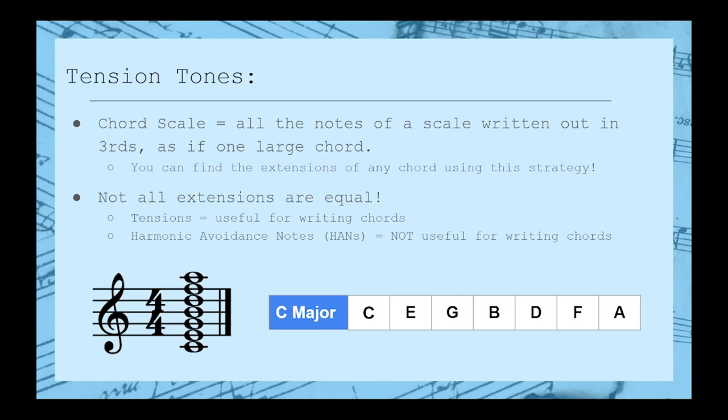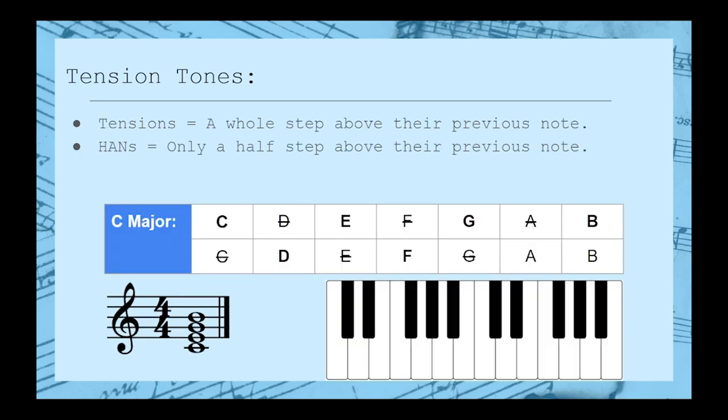And as the name suggests, they are to be avoided when it comes to creating extended chords. Fortunately, it's not too difficult to tell the difference. Essentially, just collapse your extensions by dropping them an octave and comparing them to the previous notes.